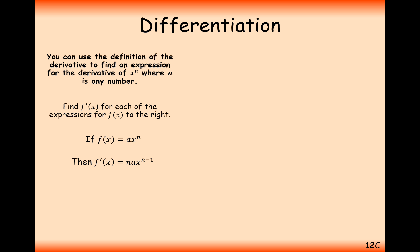Let's have a go at a few questions. So f(x) equals x to the 6, and we want to find f'(x). Following our two-step process, we get the 6 and multiply it at the front — so 6 times 1 is 6 — and then 6 take away 1 is 5, so it's 6x to the power of 5.